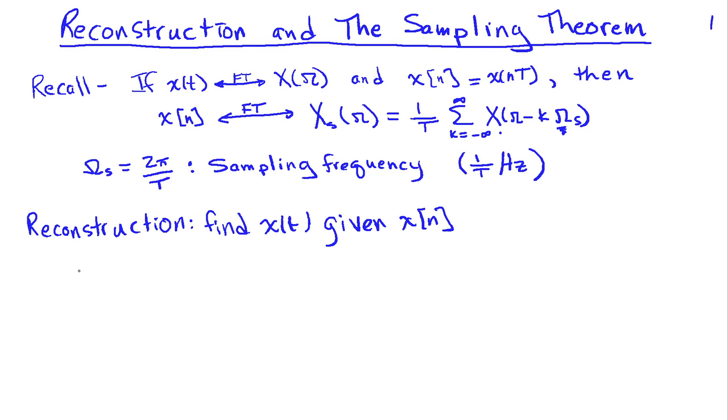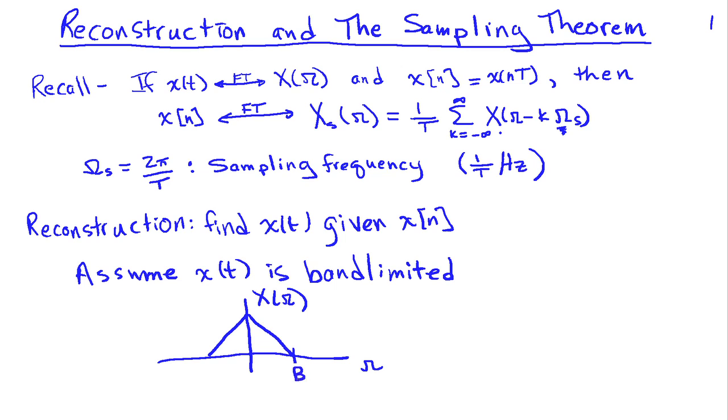and that is to assume that x(t) is a band-limited signal. Now, what we mean by band-limited is that it has no energy above a certain frequency. So, if I sketch a spectrum, say X(ω), and the example we're going to do is the famous triangle spectrum, and so we'll have this corner B and minus B, and band-limited means that X(ω) is equal to zero for magnitude of ω greater than B.